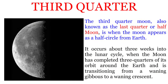The third quarter Moon, also known as the last quarter or half Moon, is when the Moon appears as a half circle from Earth. It occurs about three weeks into the lunar cycle when the Moon has completed three quarters of its orbit around the Earth and is transitioning from a waning gibbous to a waning crescent.